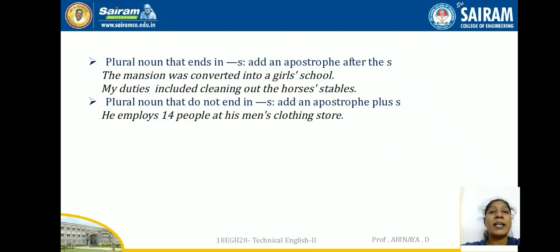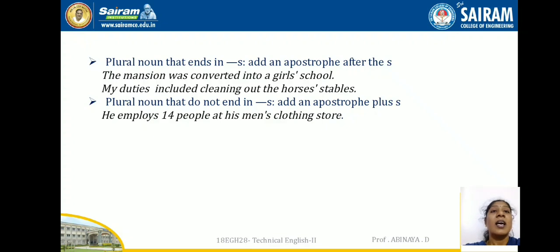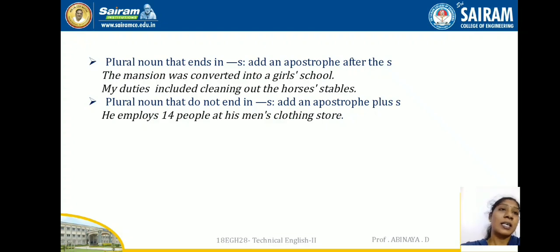For plural nouns that end in S, add only an apostrophe at the end of the word — after the S. For example: 'The mansion was converted into a girls' hostel.' The hostel belongs to the girls, which is plural, so the apostrophe goes at the end. Another example: 'My duties included cleaning out the horses' stable.'